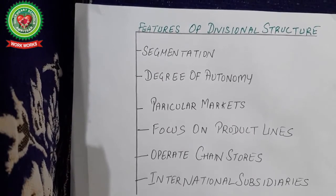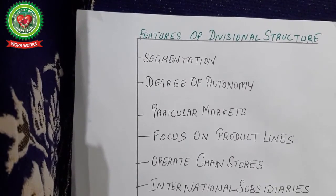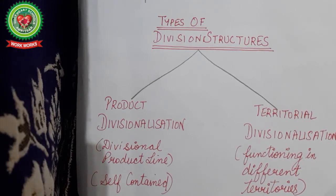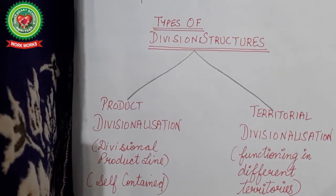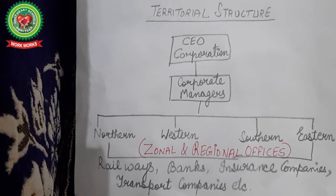Let us now discuss the types of divisional structure. One is product divisionalization and another is territorial divisionalization. Territorial divisionalization means functioning in different areas or territories. Good examples of territorial structures are railways, banks, insurance companies, and transport companies. Here the CEO and corporate managers are there, but all activities are divided into zonal and regional offices located north, west, south, and east.